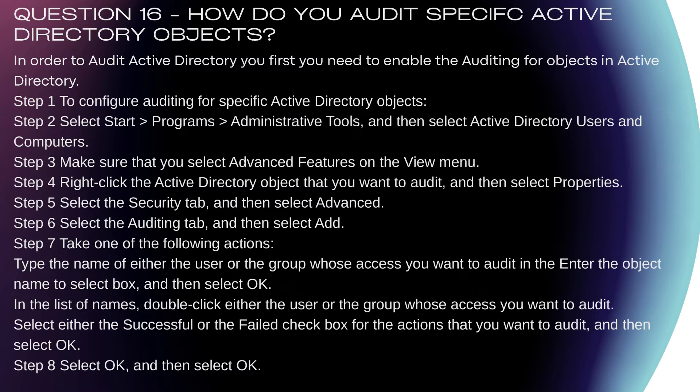Question 16: How do you audit specific Active Directory objects? To audit Active Directory, you first need to enable auditing for objects. Step 1: To configure auditing for specific Active Directory objects. Step 2: Select Start > Programs > Administrative Tools, then select Active Directory Users and Computers. Step 3: Make sure that you select Advanced Features on the View menu. Step 4: Right-click the Active Directory object that you want to audit and then select Properties. Step 5: Select the Security tab and then select Advanced. Step 6: Select the Auditing tab and then select Add.